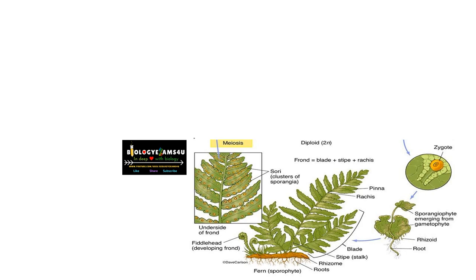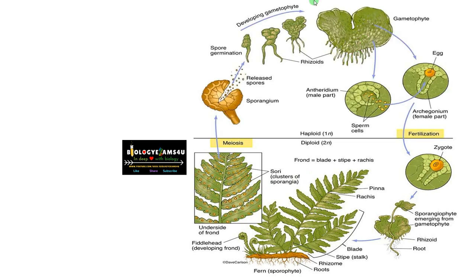As you know, ferns belong to pteridophyta, where the dominant phase is the sporophytic phase. The plant that we see is a sporophyte — it has leaf, rhizomatous stem, and roots. This is the first phase in the life cycle, and the second phase is the gametophytic phase, which is minute and microscopic.